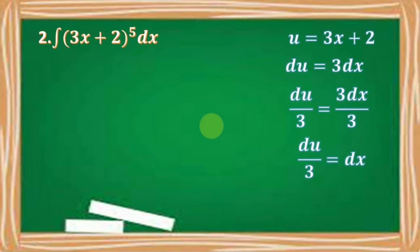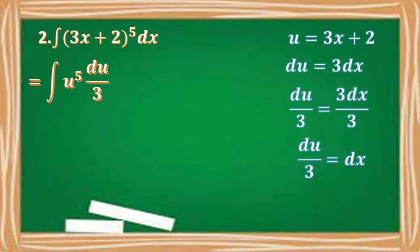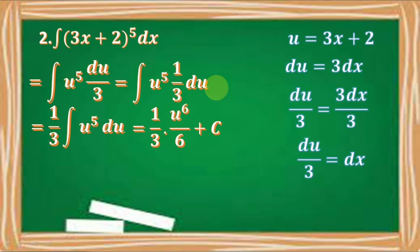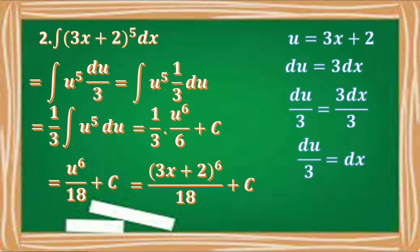We have du over 3 equals dx. Substituting u for 3x plus 2 and du over 3 for dx, we have the integral of u to the 5th times 1 third du, which equals 1 third times the integral of u to the 5th du. Applying the anti-differentiation rule, we have 1 third times u to the 6th over 6 plus c, giving us u to the 6th over 18 plus c. Then substituting back, we have the quantity 3x plus 2 to the 6th over 18 plus c.